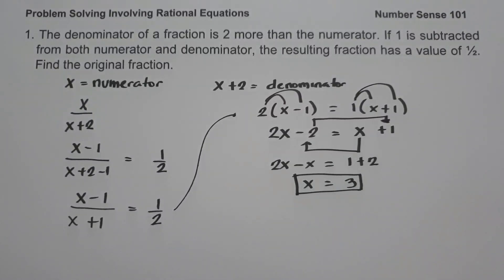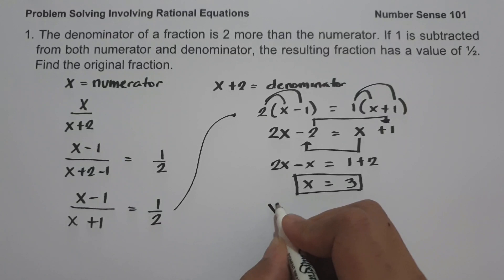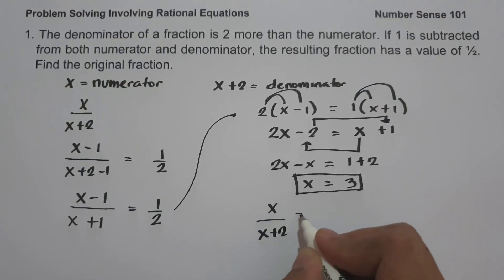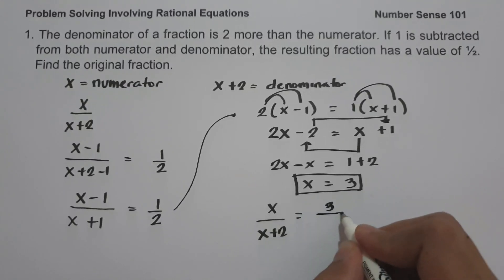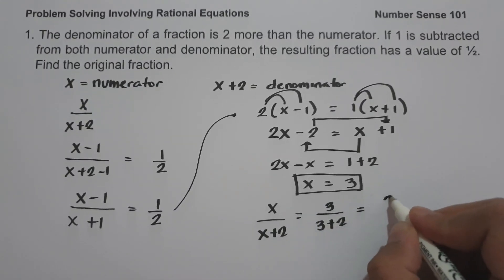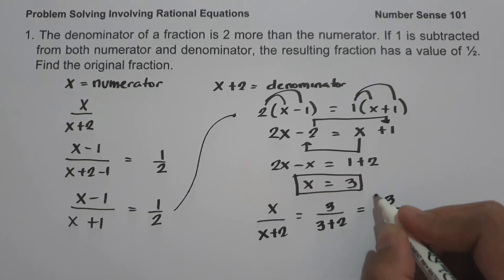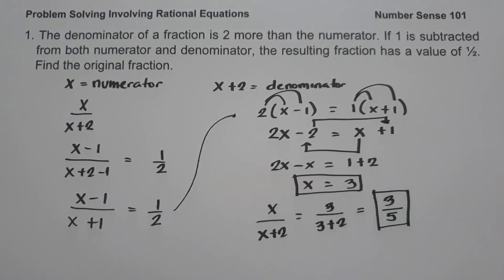So x equals three. To determine the original fraction, we have x over x plus two. Substituting the value of x, that is three over three plus two, it gives us three over five. So three over five is the original fraction.